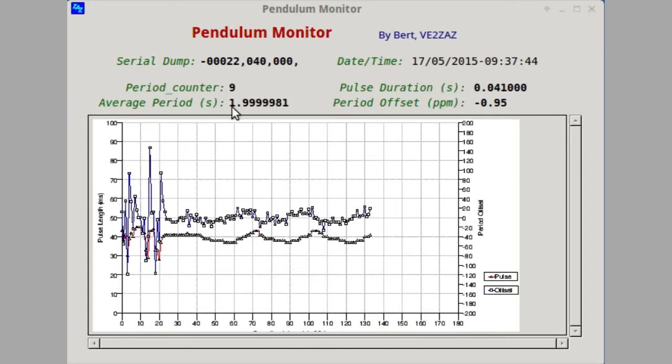So right now, the last sample, as you can see, is 1.9999981. And then the next one, it does averaging over 10 periods. And it will compute a new average period. And this, in turn, is shown as a new point here, a data point.